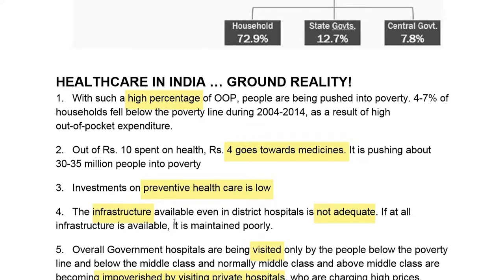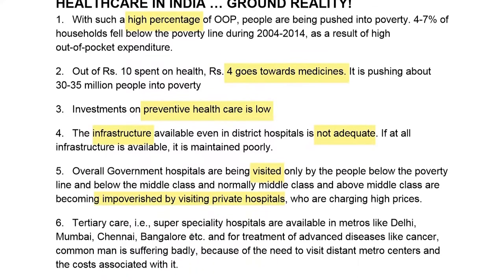Coming to investments, investment in preventive health care is very low. Preventive health care refers to the measures taken to prevent a disease from attacking a mass of people before it occurs. Coming to infrastructure in government hospitals, first of all, the infrastructure itself is not adequate, and even where it exists, it is maintained in very poor condition. Overall, government hospitals have become hospitals primarily serving people below the poverty line and middle class people.